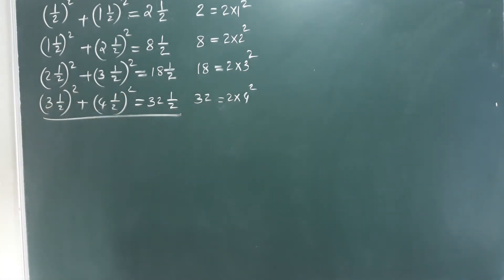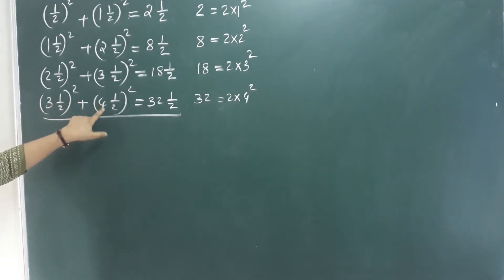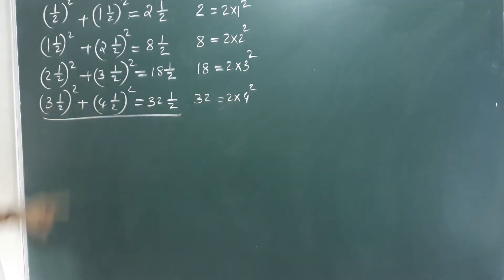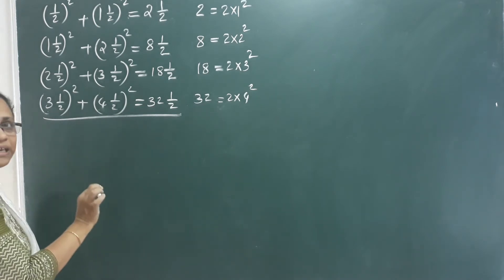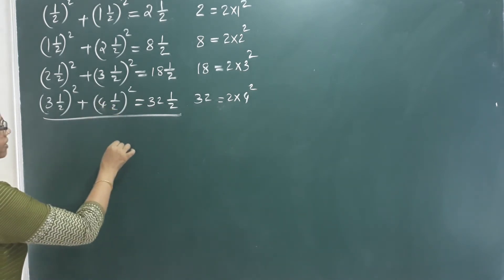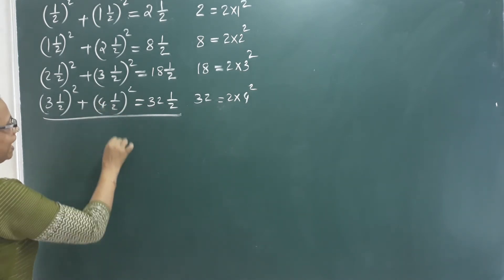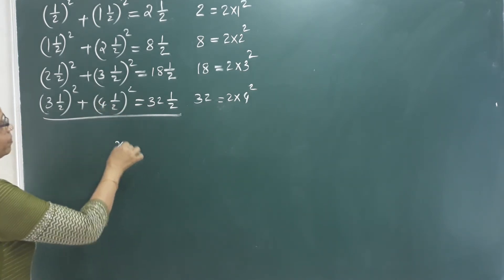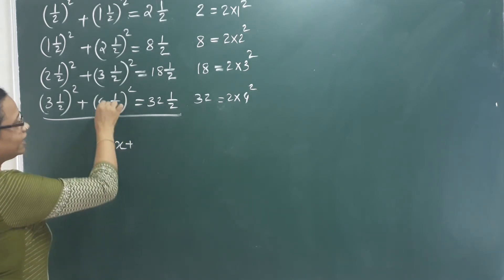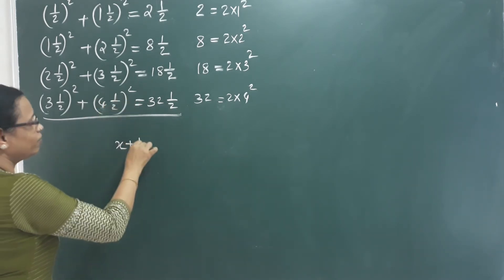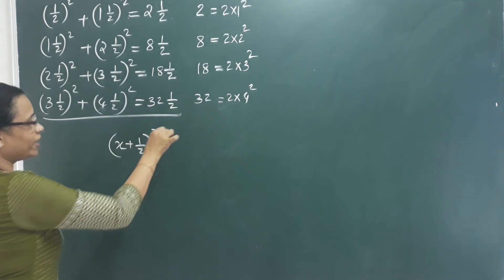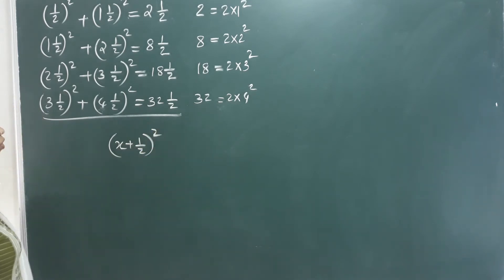We can use algebra. Put in the number x, and then x minus half and x plus half. Again, what do we think? x square plus — I put this number as 4 in total.